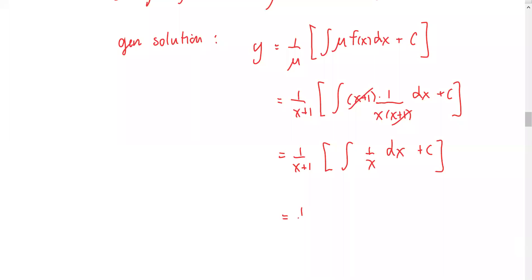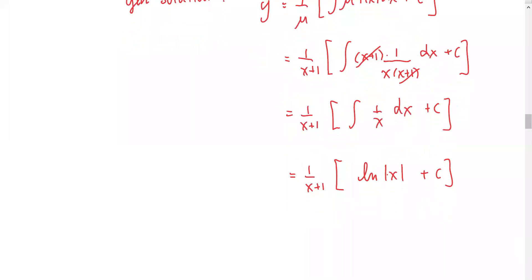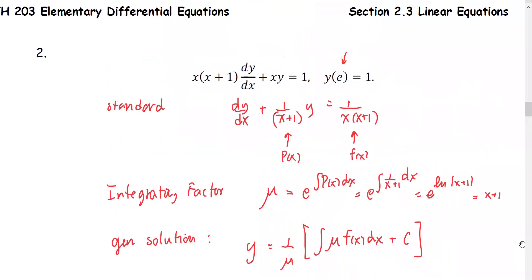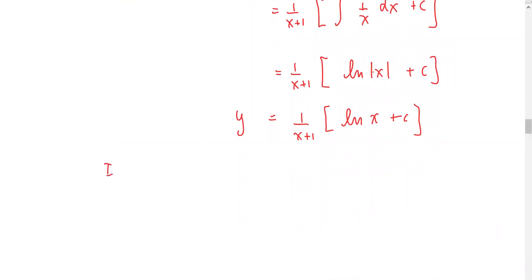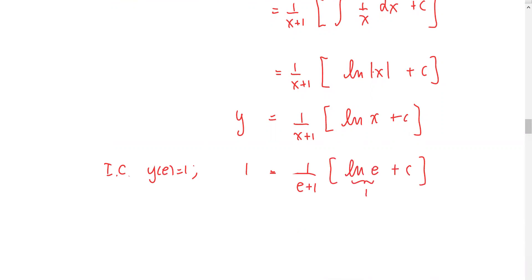The integral of 1 over x gives us natural log of x. We can omit the absolute value since the initial condition occurs at x equals e, a positive value. So y equals 1 over (x+1) times (natural log x plus C). Applying the initial condition y at e equals 1: y equals 1 and x equals e. Since natural log of e equals 1, multiplying both sides by (e+1) gives e+1 equals 1 plus C, so C equals e.